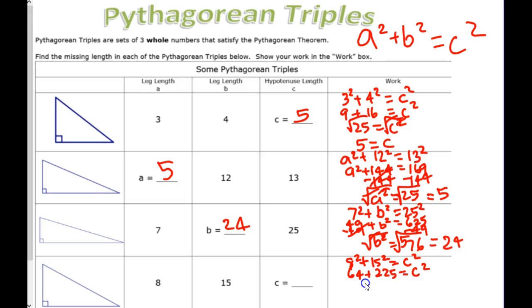225? Equals C squared. Add them up. What do we get? 289 equals C squared.